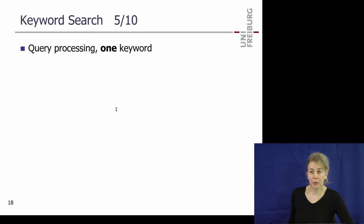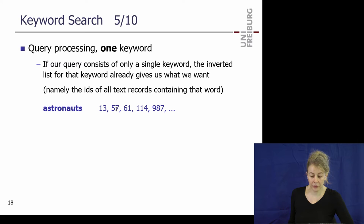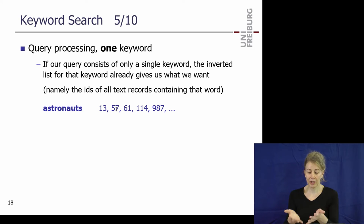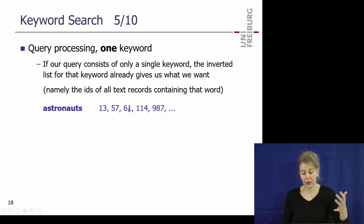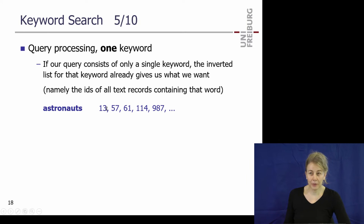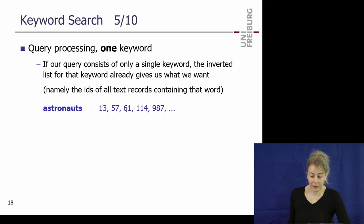How do you process a query? If your query is the word 'astronauts,' you've pre-computed it — you just output the document IDs from that inverted list, say 13, 57, and 61. Of course you don't output just the IDs but the document titles too, so you look up 13 as 'movie blah' and so on. It's pre-computed and very fast.